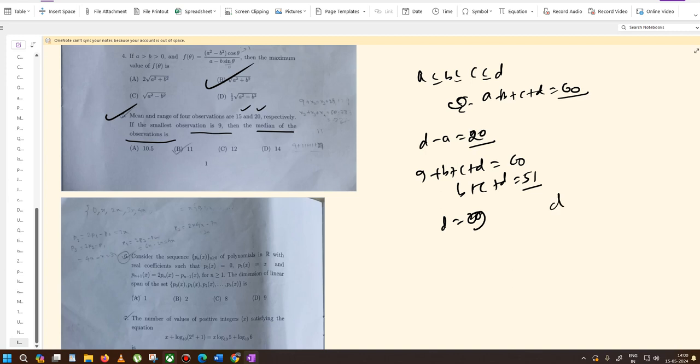Now we have the ordered observations 9, b, c, 29, and we need to find the median.